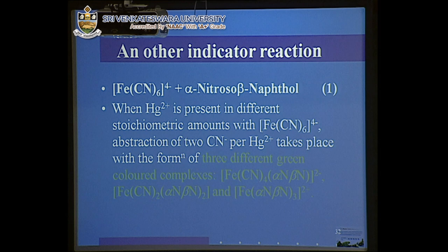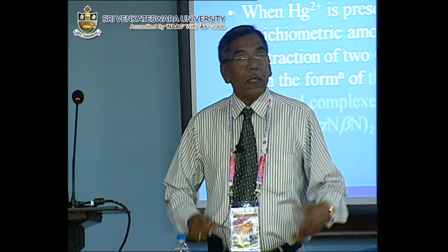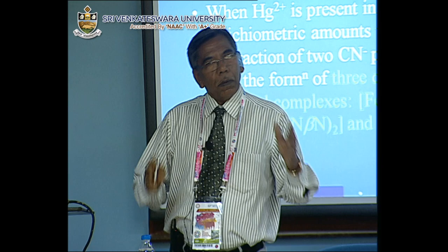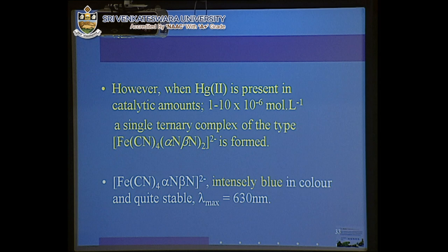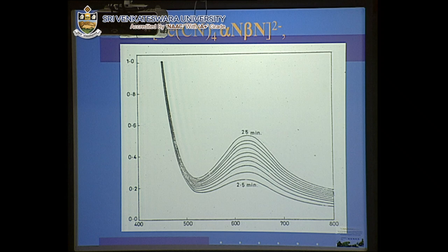Another reaction system was applied for a similar type of reaction: FeCN6 (hexacyanoferrate(II)) and alpha-nitroso-beta-naphthol. The difference from the first system is that this one is less sensitive in comparison to the previous, but has ten times longer concentration range than the previous one — from 200 ppb to 2000, versus 20 to 200 for the previous. The complex formed is intense blue and absorbs at 630 nanometers.